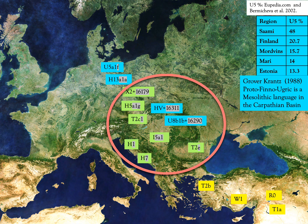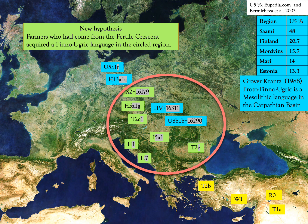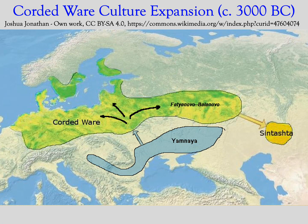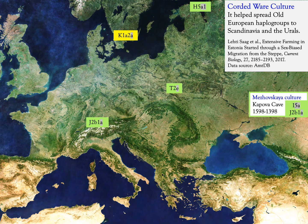This data supports the hypothesis that Proto-Finno-Ugric is a Mesolithic language that had a homeland somewhere in the Carpathian Basin. To this we add a new hypothesis: farmers who had come from the Fertile Crescent acquired a Finno-Ugric language in this region, and from there they went north, east, and south. Archaeologists identified the Corded Ware culture as one that moved north and east starting around 3000 BC, helping spread all European haplogroups to Scandinavia and the Urals. Even the Mežovskaya culture, associated with Proto-Ugric speakers, contains similar haplogroups.